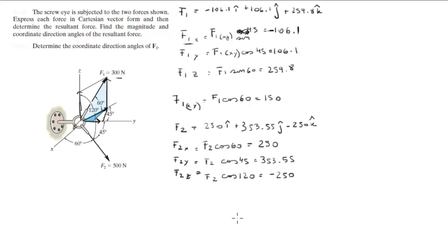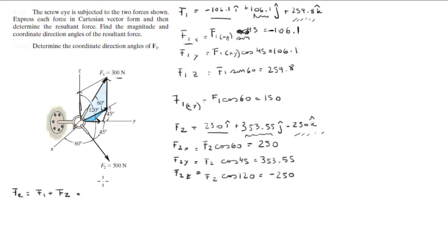Now that we have both forces, we can find the resultant force FR, which is the sum of F1 and F2. You just add the x-components with x-components and y-components with y-components. Adding them up gives FR = 143.9i + 459.65j + 9.8k.